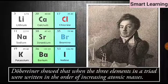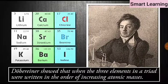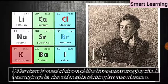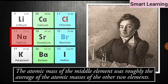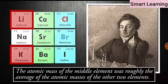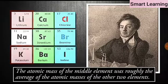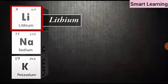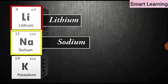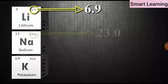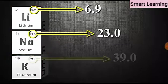Dobereiner showed that when the three elements in a triad were written in the order of increasing atomic masses, the atomic mass of the middle element was roughly the average of the atomic masses of the other two elements. For example, take the triad consisting of lithium, sodium and potassium with the respective atomic masses 6.9, 23.0 and 39.0.